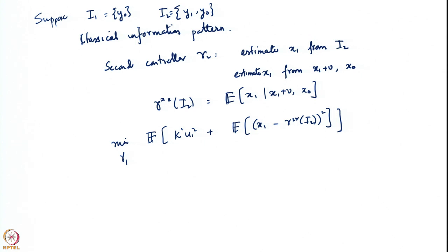My claim is that you can actually make this cost 0 as well. One possibility is that γ1 simply chooses u1 to be γ1*(x0) equal to 0. In other words, regardless of the value of x0, γ1* is now 0.